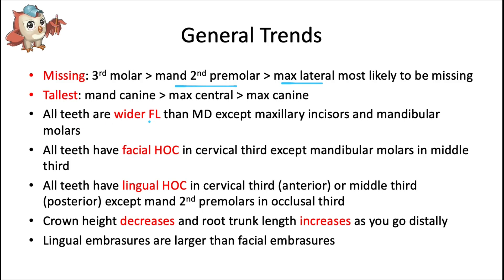All teeth are wider faciolingually than mesiodistally, except maxillary incisors and mandibular molars, which are wider mesiodistally. All teeth have a facial height of contour in the cervical third, except mandibular molars, which have it in the middle third. The lingual height of contour is in the cervical third for anterior teeth and the middle third for posterior teeth, except mandibular second premolars, which have their lingual height of contour in the occlusal third. Lingual embrasures are almost always larger than their facial counterparts to encourage pushing food toward the tongue.